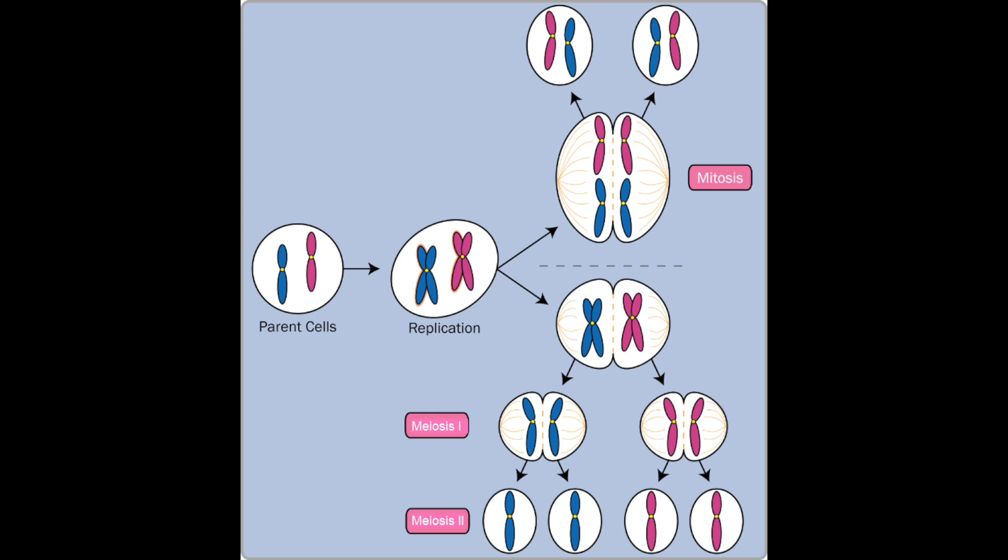Unlike in mitosis when we end up with two daughter cells, in meiosis we end up with four daughter cells. We start off with a normal cell which has two pairs of chromosomes. Then the chromosomes are copied which means that we have four pairs of chromosomes or eight chromosomes.